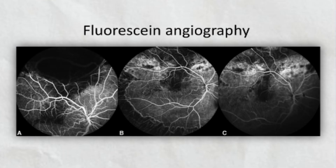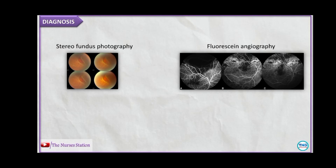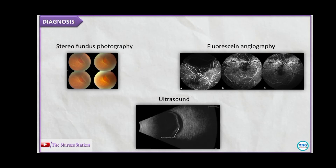The next is stereofundus photography, which involves photographing the rear of the eye. The next is fluorescein angiography, in which a dye is injected into the vein and then a camera-like device takes pictures as the dye moves through the blood vessels in the back of the eye. Ultrasound may also be used, especially if the view is blocked due to hemorrhage in the vitreous.